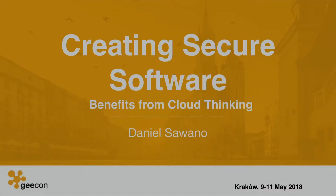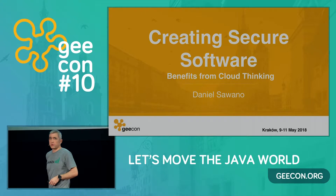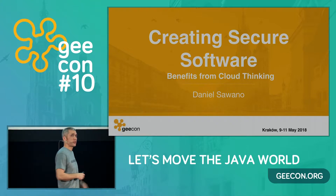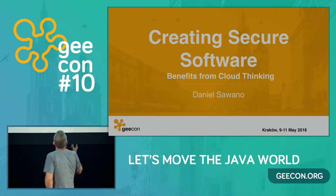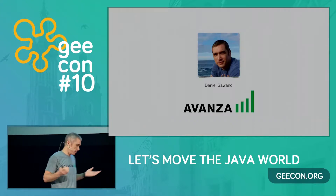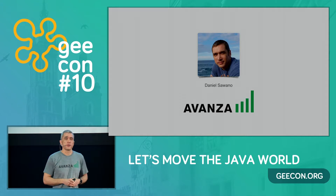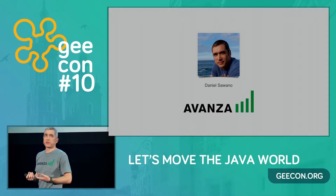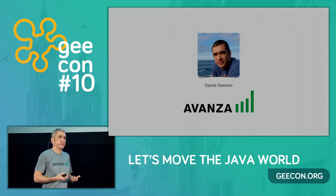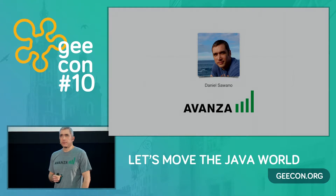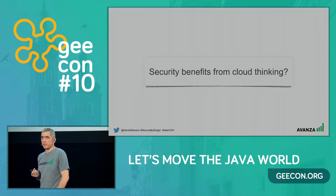Good to see that so many are interested in creating secure software. Just to let you know, there was a bug - the printer schedule shows the talk I gave last year. So this year I'm going to talk about creating secure software benefits from the cloud. My name is Daniel Sawano, I work at a company called Avance Bank, which is an internet-based bank and stockbroker based in Stockholm, Sweden. I spend most of my days writing code, thinking about architectural problems, and I also think a lot about security challenges that we face as developers. The topic is all about security benefits from cloud thinking.